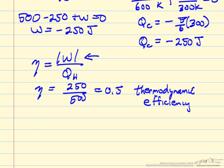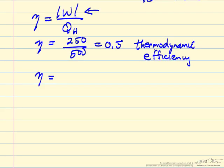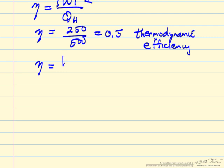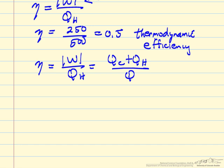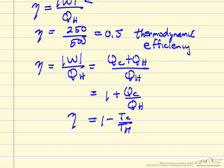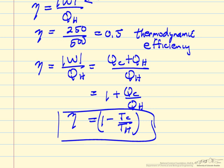And in general, if we look at this definition, we can talk about the efficiency, work over QH. Well, work is QC plus QH. This will be a positive number over QH. So this is 1 plus QC over QH. We can show that this is equal to 1 minus TC over TH. So efficiency for Carnot cycle is just related to the temperatures. Absolute temperature must be used in this calculation.